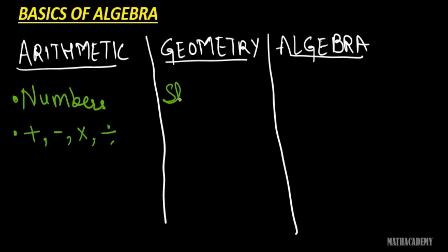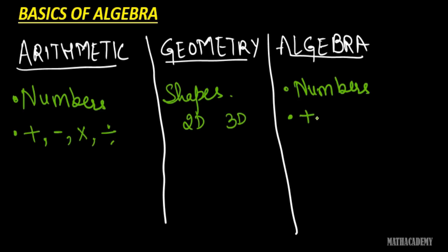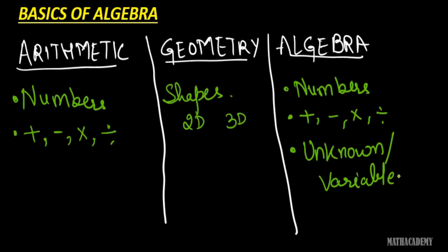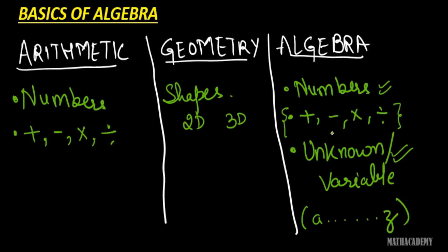In geometry, what do we deal with? We deal with shapes — it can be two-dimensional, it can be three-dimensional, etc. Now in algebra, there are also numbers and we also perform operations like plus, minus, multiplication, division. So how is algebra different from arithmetic? In algebra we have something called the unknown or the variable, and these unknowns or variables can be represented by any small letter from A to Z, or any literal. So algebra consists of numbers, literals which are known as unknowns or variables, and we can perform operations like addition, subtraction, multiplication, or division.